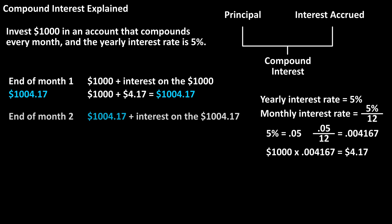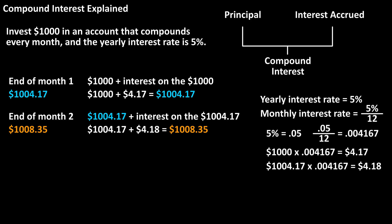At the end of the second month, another interest payment will be made, just as we did after one month. To calculate the payment, we multiply the new balance of $1,004.17 times the monthly interest rate of .004167, which calculates to $4.18 rounded off. So after the interest payment, the account will have accrued the balance of $1,004.17 plus the $4.18 interest payment for month two.